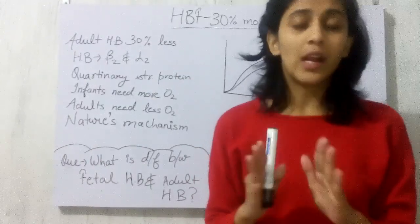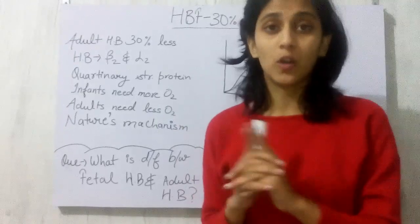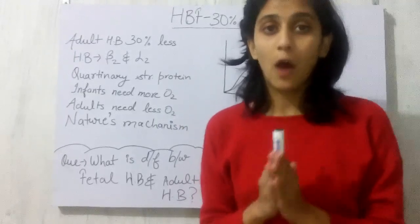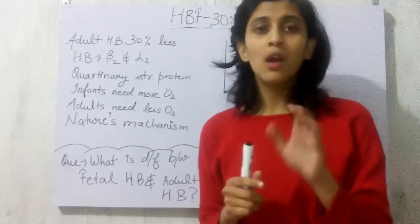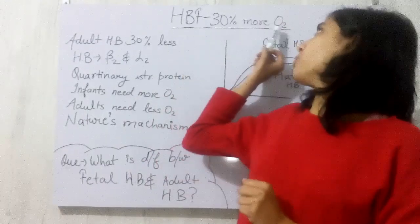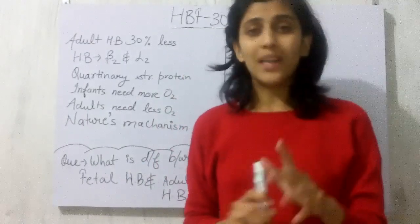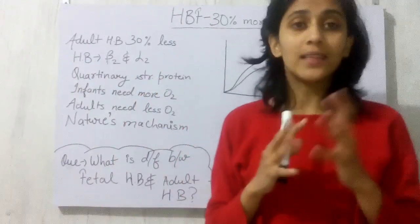Now where is the thing that makes difference? This is nothing but the oxygen affinity. The HB of the fetus is having 30 percent more oxygen affinity, while the HB of an adult is having 30 percent less oxygen affinity.